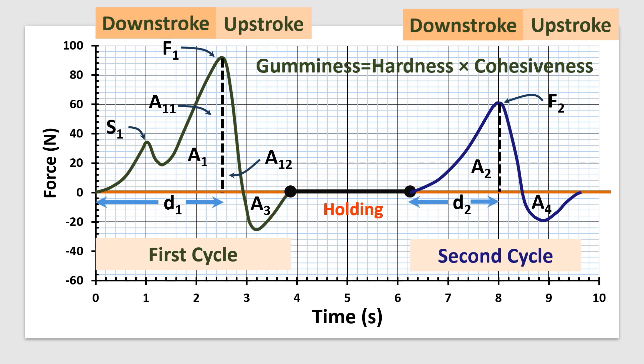Resilience is the area under the curve after peak force is reached during first cycle divided by the area under the curve before the peak force is reached in the first cycle. That is resilience equals A12 divided by A11. It is the ability of a food to fight back.